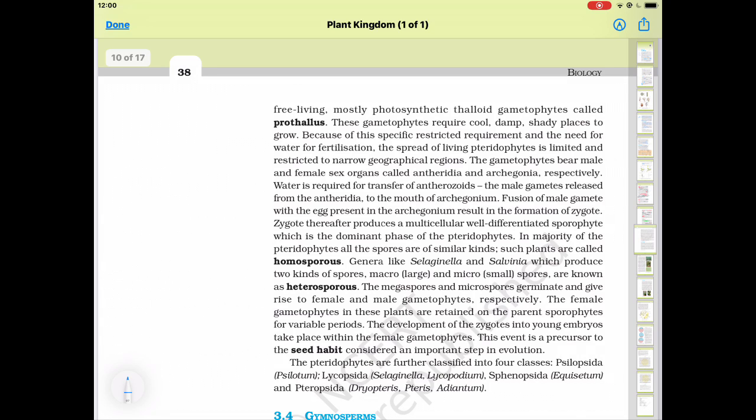Fusion of male gamete with the egg present in the archegonium result in the formation of zygote. When antherozoid and egg fuses, zygote is formed. Zygote therefore produces a multicellular well-differentiated sporophyte. Then zygote develops into first embryo and then embryo goes into a new sporophyte which is the dominant phase of the pteridophytes.